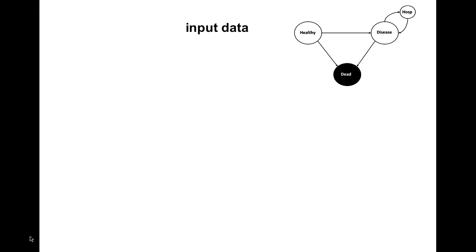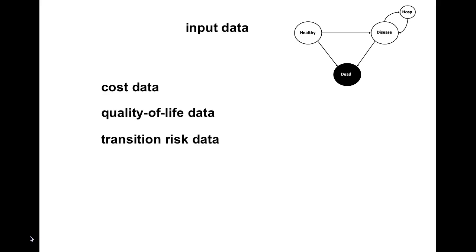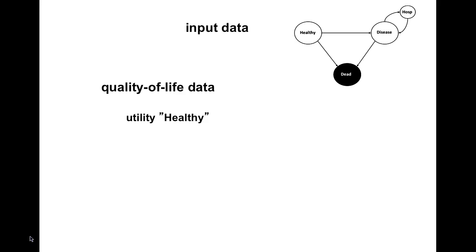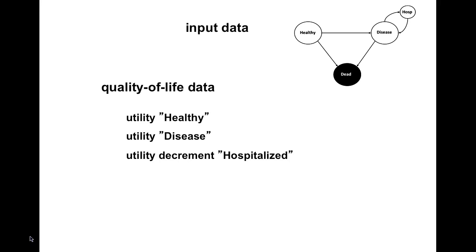The input data to our model consists of cost data, quality of life data, transition risk data, and data on treatment effects. The cost data consists of the cost of the treatment — in this case the cost of the drug, but could also include cost of administration — as well as cost of hospitalizations and productivity losses. The quality of life data are the utility for the health state healthy, the utility for the health state disease, and the utility decrement for the transitional state hospitalized. This decrement is subtracted from the utility of the state disease for those who are hospitalized.